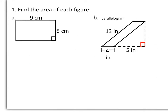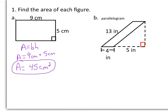In number one, we want to find the area of each figure. In letter A, we have a rectangle — the right angle in the figure tells us that. Area of a rectangle is base times height, so area equals 9 centimeters times 5 centimeters. 9 times 5 is 45, so the area is 45 centimeters squared. Make sure you're labeling your area with the correct units.